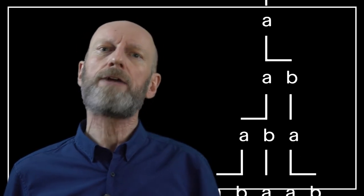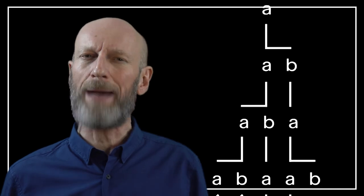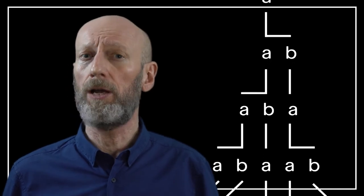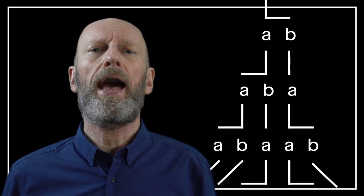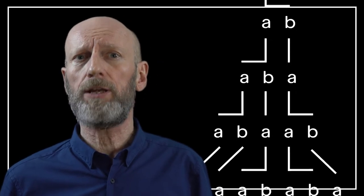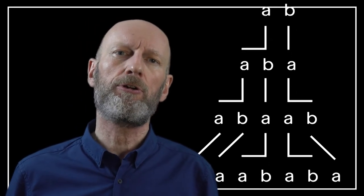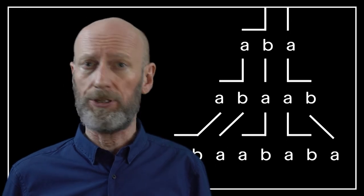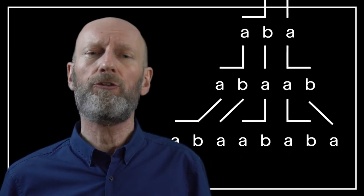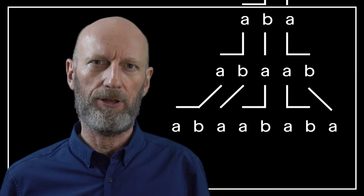The English Wikipedia page on the subject defines it clearly and succinctly, and so we may as well quote it. An L system consists of an alphabet of such symbols that can be used to make strings, a collection of production rules that expand each symbol into a larger string of symbols, an initial axiom string from which to begin construction and a mechanism for translating the generated strings into geometric structures.